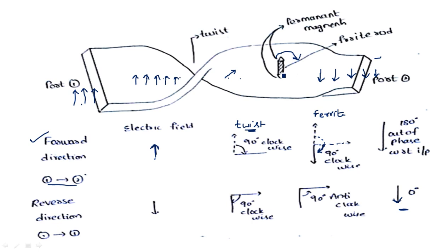Because it is going in the reverse direction it gives anti-clockwise 90 degrees, so the orientation will be in the horizontal direction. This orientation is due to the ferrite magnetic material which gives a rotation of 90 degrees in the anti-clockwise direction.